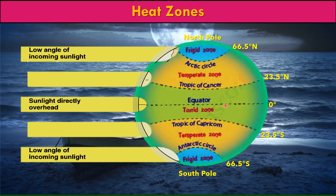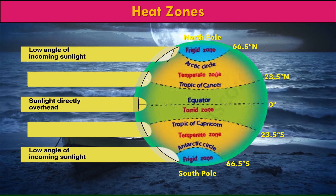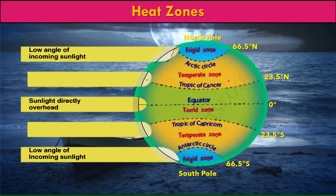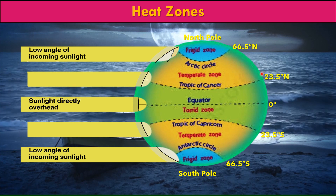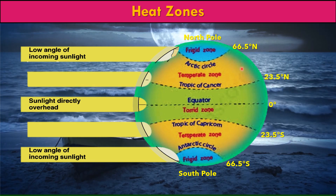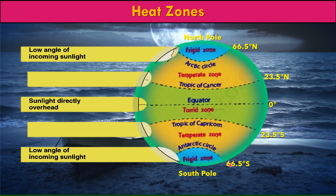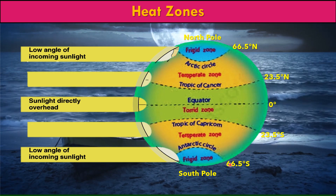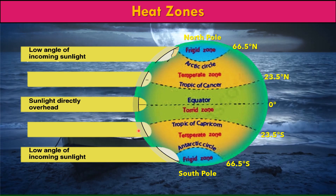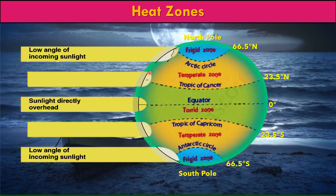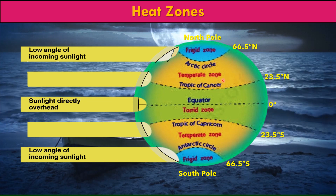Next is the temperate zone. It lies between the Tropic of Cancer and the Arctic Circle in the northern hemisphere, and between the Tropic of Capricorn and the Antarctic Circle in the southern hemisphere. In this zone, the sun's rays never fall vertically — they are always oblique. This zone is neither too hot nor too cold.